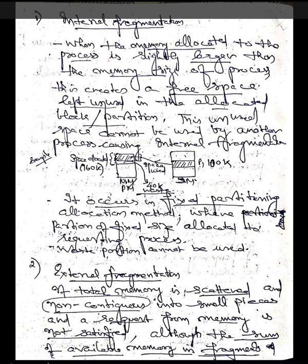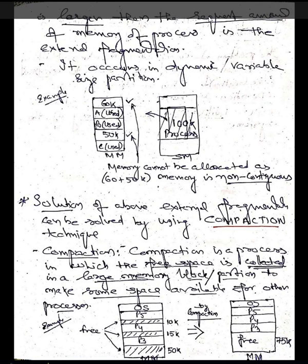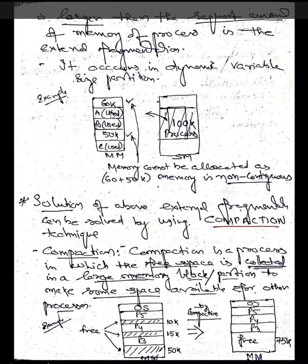External fragmentation occurs when total memory is scattered and non-contiguous — split into small pieces — and a memory request cannot be satisfied even though the sum of available memory fragments is larger than the requested amount. For example, if 100 KB is needed, and 60 KB and 50 KB are available but non-contiguous, the request cannot be met. External fragmentation occurs in dynamic and variable-size partition systems due to the dynamic nature of memory allocation.